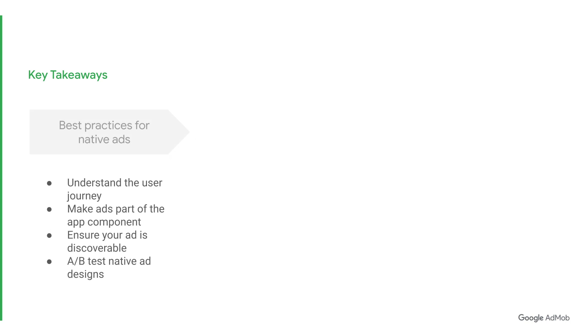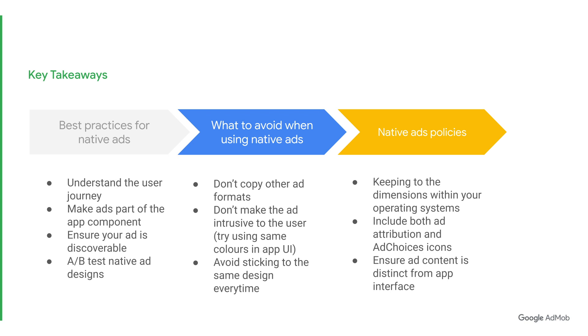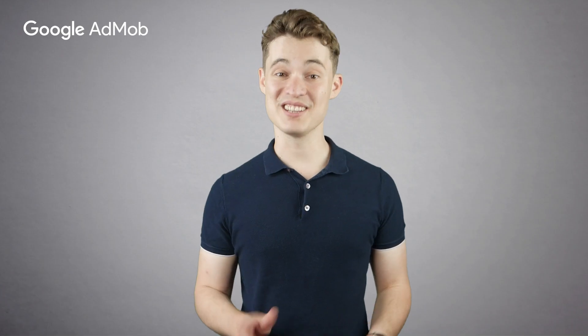And that concludes the second part of our native ads two-part series. To recap: understand the user journey and make the ad an integrated part of the user experience. Don't use native ads to copy other ad formats as this could violate AdMob policies. Don't make the ad look intrusive to the user. Try using the same colors of the app UI and don't stick to the same design all the time. Finally, stay policy compliant with your native ads by keeping to the dimensions described previously and include both the ad attribution and ad choices icons. Your ads should also be clearly distinct from the rest of your app interface to prevent accidental clicks. Thank you for watching Google AdMob tutorials. We hope you find them useful. We have even more resources down by the description box, and be sure to subscribe to the Google AdMob channel for more best practices and tips on how you can grow your app even further.